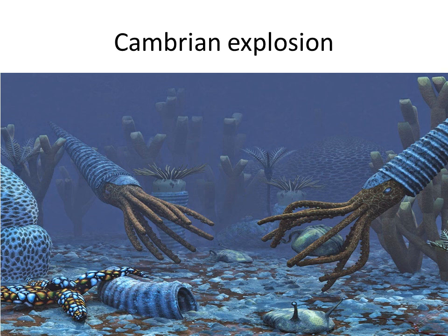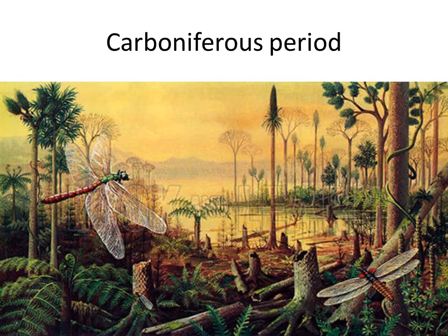The first plants began to live on land about 430 million years ago, and 50 million years later the Earth was suitable for the first land animals. The most well-known period with fossils from that time is the Carboniferous period, when many arthropods — insects and spiders — lived, and they were really big. These dragonflies had a wingspan of up to 70 centimeters.